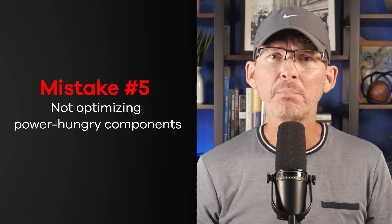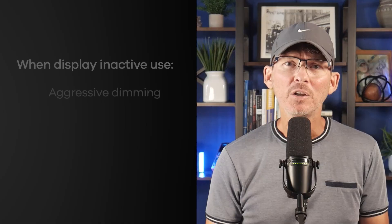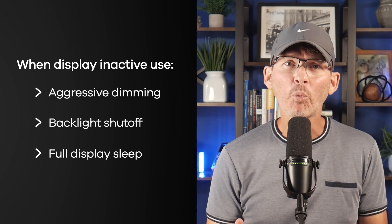Mistake number five: not optimizing power-hungry components, especially displays. Even if your core design is efficient, a single poorly managed component can ruin your battery life. OLED displays consume more current the brighter they are, and white pixels draw significantly more power than black pixels. Backlit LCDs draw constant current unless dimmed or turned off. Use aggressive dimming, backlight shutoff, or full display sleep when inactive. Dark user interfaces also help, especially for OLEDs. It's not just displays — sensors, voltage regulators, and even indicator LEDs can draw surprising amounts of current, not just when active but also in idle states. Always check datasheets for both active and sleep current.